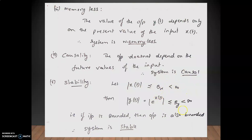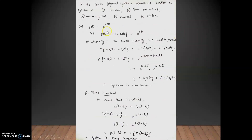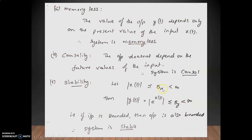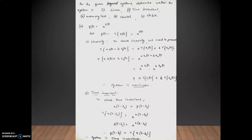To verify stability, we use the bounded input bounded output (BIBO) condition: if the input is bounded, the output should also be bounded. If x(t) is a finite value — less than infinity — then y(t) = e^x(t) is also a finite value. Since bounded input gives bounded output, the system is stable. This concludes the verification of all system properties for y(t) = e^x(t).